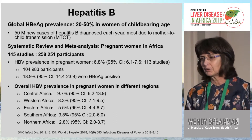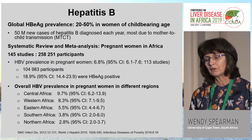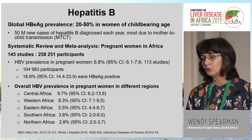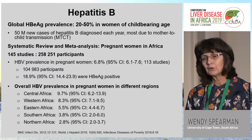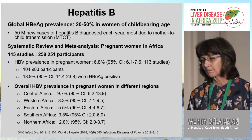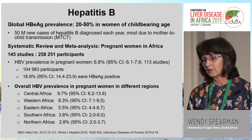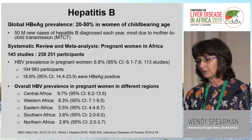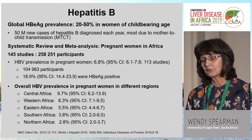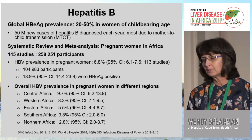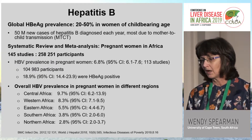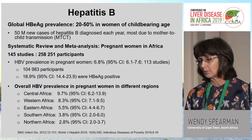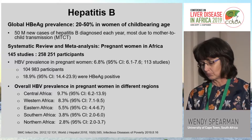Looking at the global e-antigen prevalence, it probably accounts for 20% to 50% of women of childbearing age, and 50 million new cases are diagnosed each year, most thought to be a result of mother-to-child transmission. A systematic review and meta-analysis of 145 studies with nearly 260,000 participants in pregnant women in Africa showed a prevalence of 6.8%, with 19% of those being e-antigen positive. Prevalence varied across regions: highest in Central Africa at 9.7%, Western Africa at 8.3%, Southern Africa at 3.8%, and Northern Africa at 2.8%.